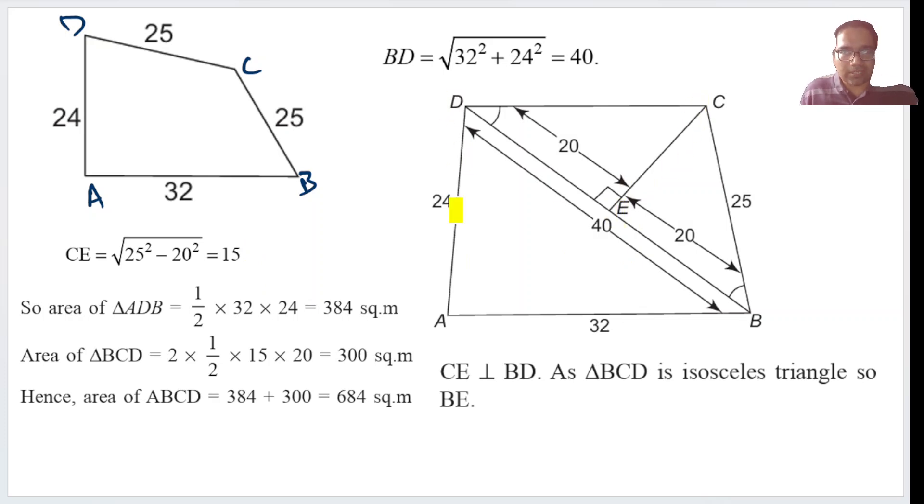Now what is the total area? Total area is ABD plus BCD, two triangles. Area of ABD is half into base into height, half into 32 into 24, which is 384.